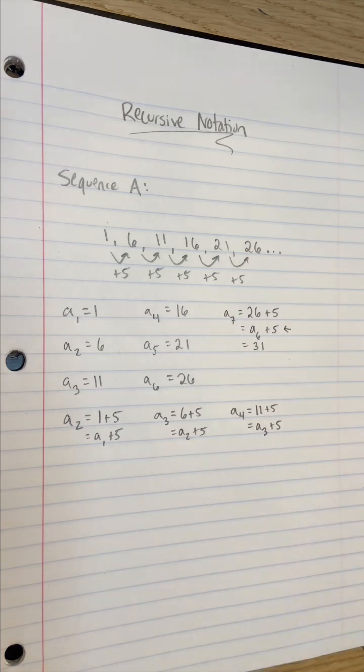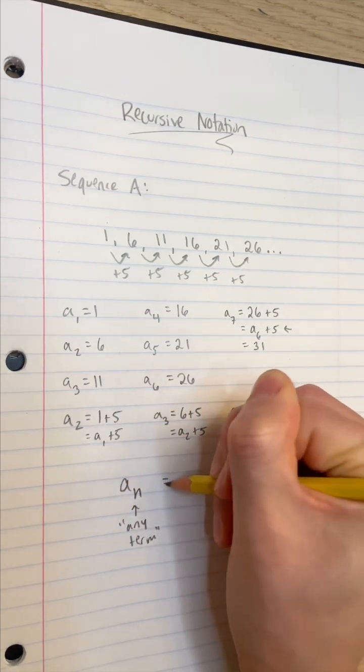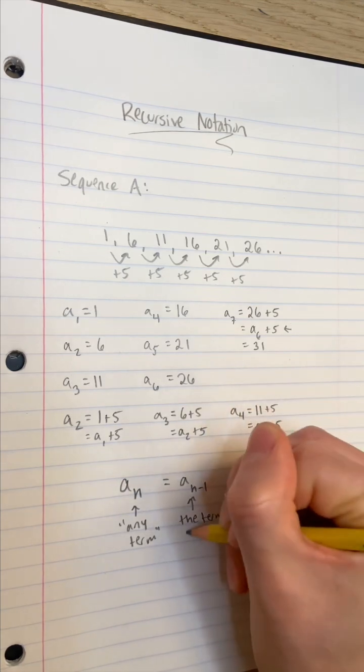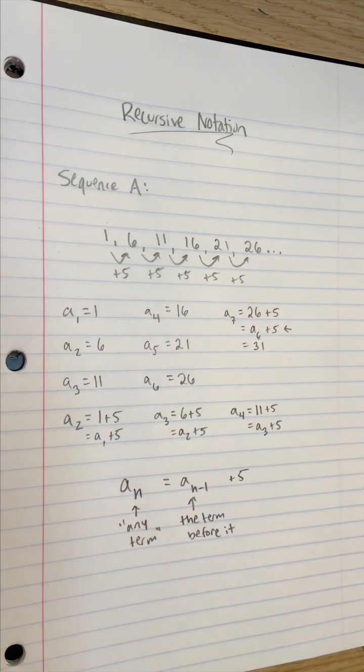So in general, we can say that A sub n, the nth any term in sequence A, is just the previous term, A sub n minus 1 plus 5. This is called a recursive formula. The reader must have knowledge of at least one previous term to generate a new term.